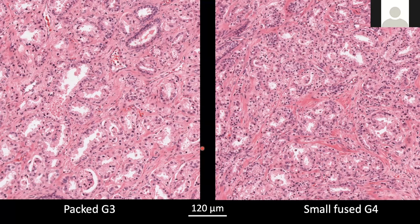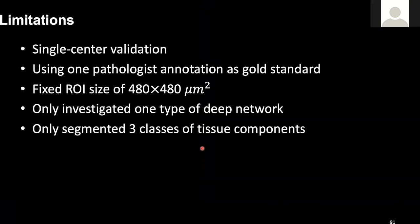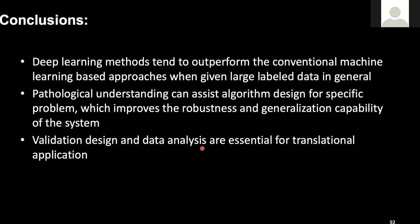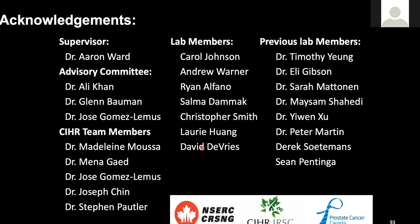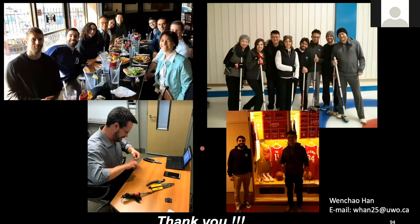We have several limitations in our study, including using data from a single center, a single pathology annotation which limits variability, fixed ROI size, a limited number of methods investigated, and only three tissue components segmented — segmenting more tissue components may yield better performance. In conclusion, deep learning seems better than conventional machine learning-based approaches. Pathological understanding is very important for designing algorithms to deal with specific problems, and validation design and data analysis is essential for translational application. I would like to acknowledge all my supervisors, collaborators, lab members and previous lab members. Thank you for your attention, I'd like to take any questions.